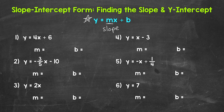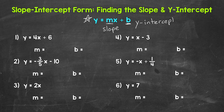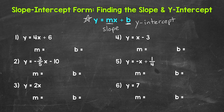Remember, slope tells us how steep a line is — how much a line changes vertically, up and down, as it moves horizontally, side to side. Then b is going to be the y-intercept. The y-intercept is where the line crosses the y-axis. So m is the slope and b is the y-intercept, and that's why we call this slope-intercept form. This gives us all the information we need to graph a line. The x and y are variables representing the x and y coordinates of any point on the line, so when writing in slope-intercept form, we can leave those as just x and y.